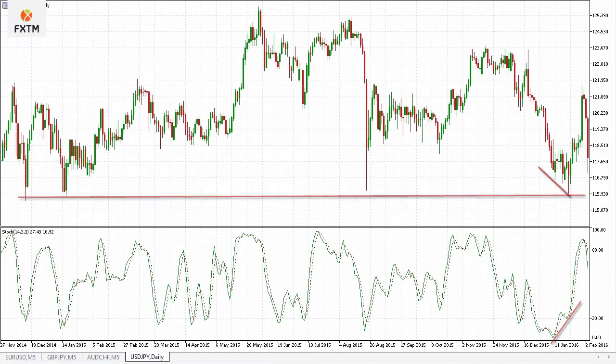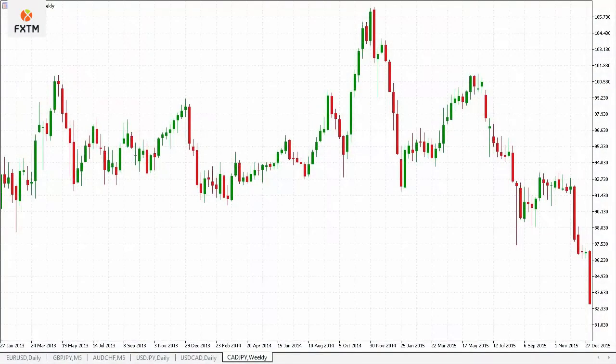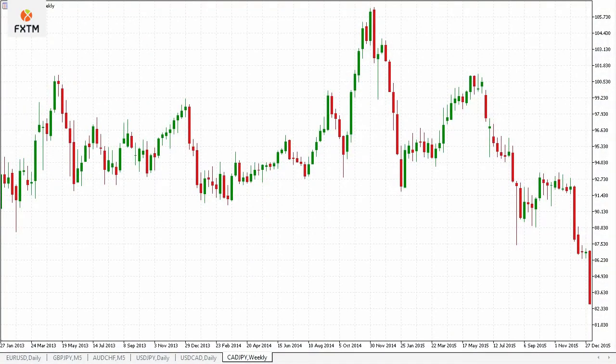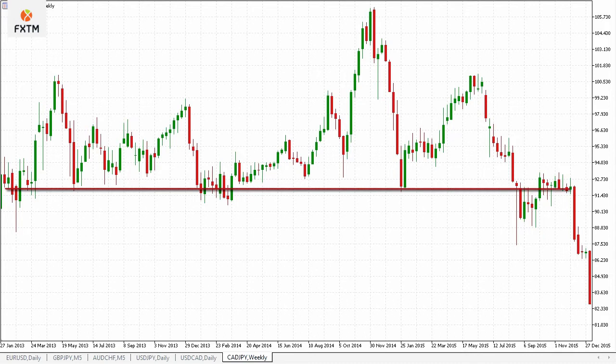Finally, here are a couple of examples of support or resistance changing places. Here with the Canadian dollar to the Japanese yen, there was a support level that was in play for a while. Over here on the right hand side of my chart, as you can see, we finally did get a pretty clear breakout below that support level.